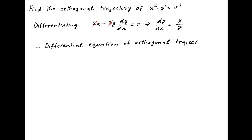The differential equation of the orthogonal trajectory can be obtained by replacing dy upon dx in the above differential equation with minus dx upon dy, and this is equal to x upon y.